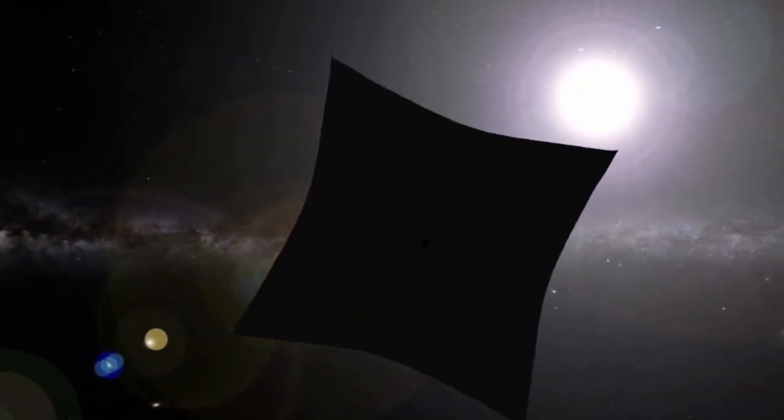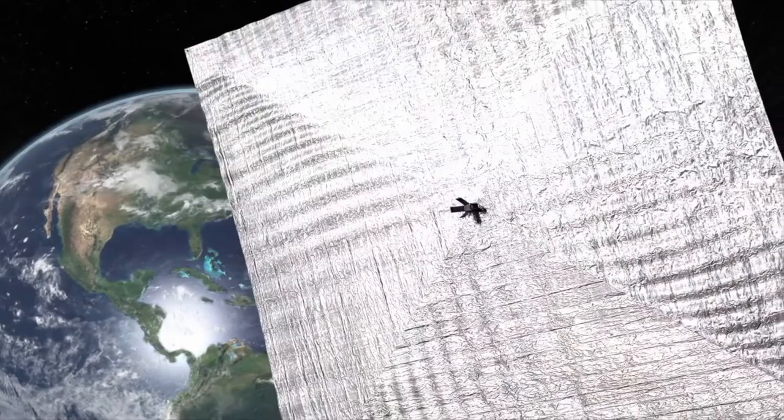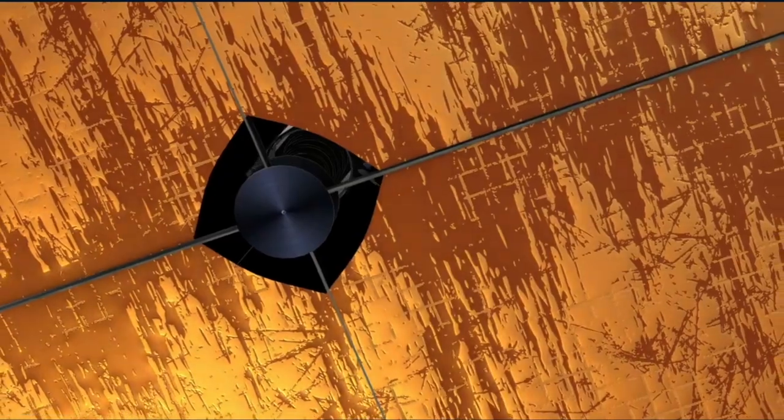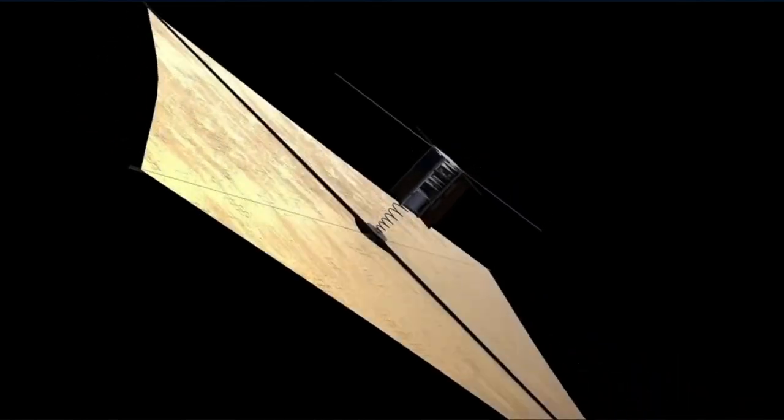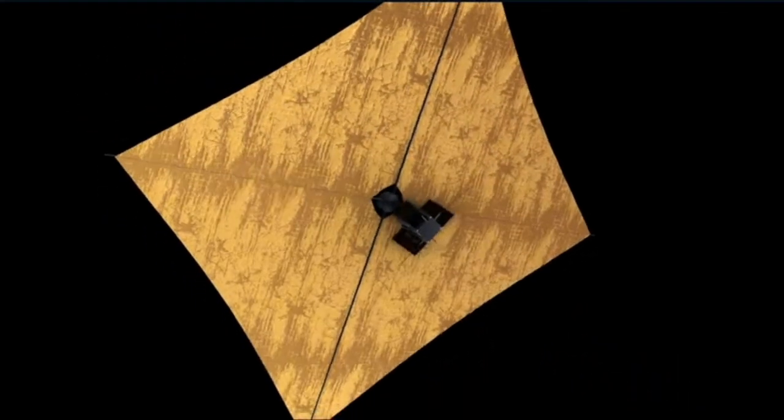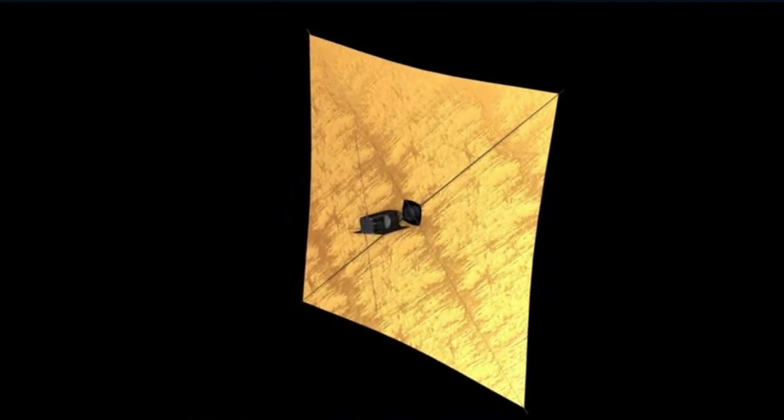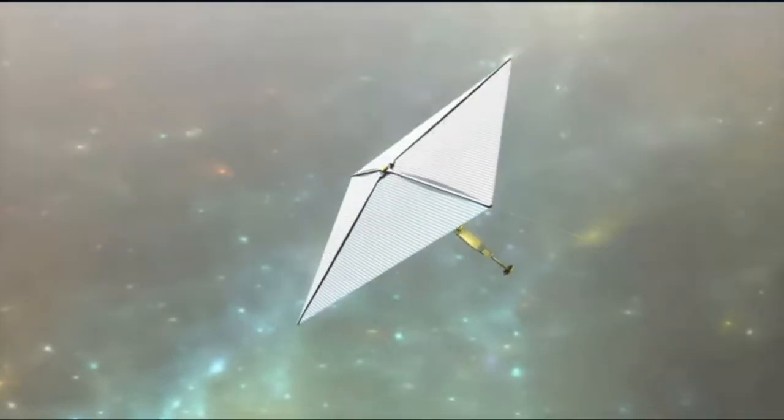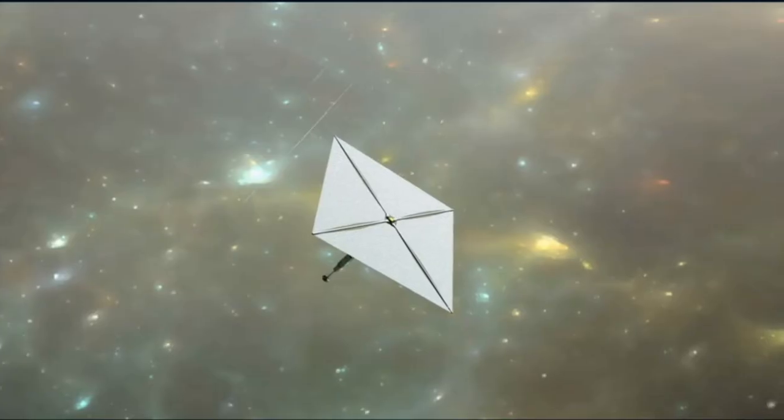An alternative to traditional solar sails is the electric solar wind sail, proposed by Pekka Janhunen. Unlike typical designs, this sail features radial conducting tethers charged to create an electric field around them. The solar wind's electrons are deflected by this field, offering a means of propulsion. By regulating the electric charge, the craft's trajectory can be adjusted. Another concept is the magnetic sail, which also capitalizes on the solar wind. Through a magnetic field, electrically charged particles in the solar wind are deflected. Unlike reflective sails, magnetic sails use wire loops with a static current running through them.